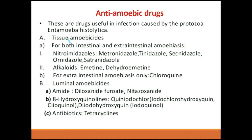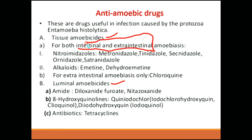The next topic is anti-amoebic drugs, which are useful for this infection. First are tissue amoebicides, and second are luminal amoebicides. Tissue amoebicides work in both intestinal and extra-intestinal sites. Intestinal means GI-related, while extra-intestinal includes the fecal-oral route and liver. So tissue amoebicides cover both areas.